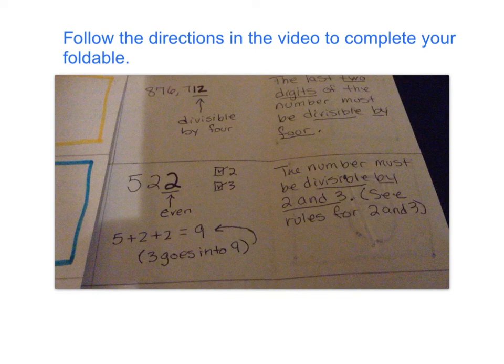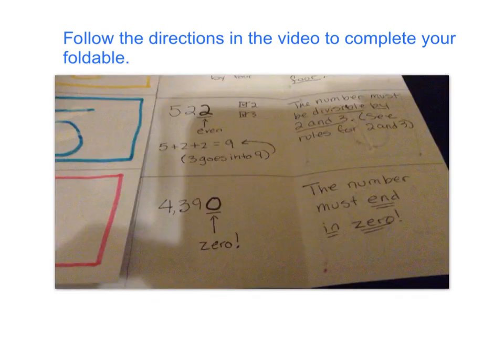There's that 9, and there's also our number 10. Here's our rule for number 10. The number must end in 0. Our example is 4,390. Make it bold, underline it, and point out that that's a 0. Then you are done with all of the writing portion of this.